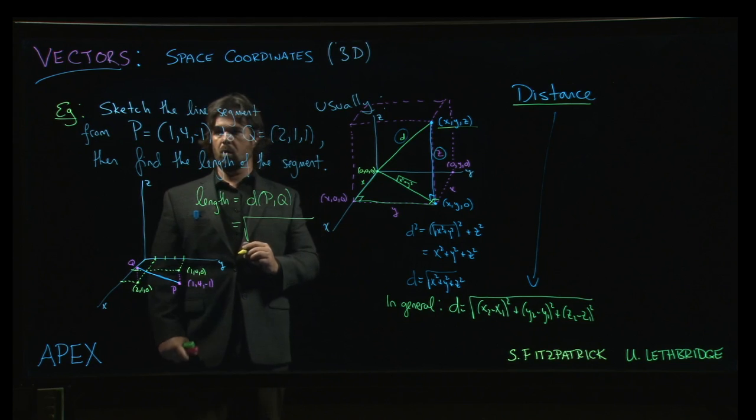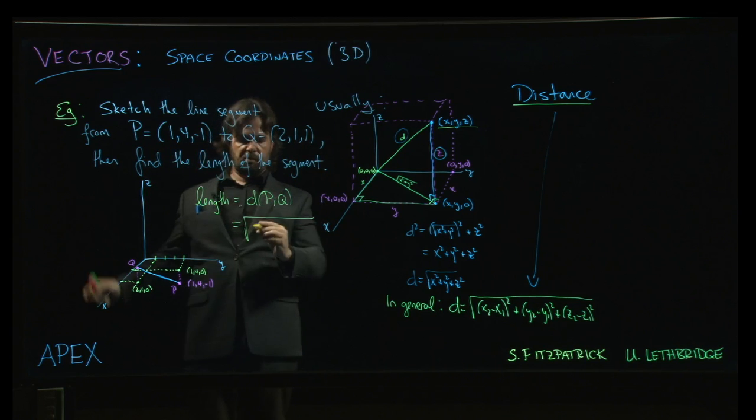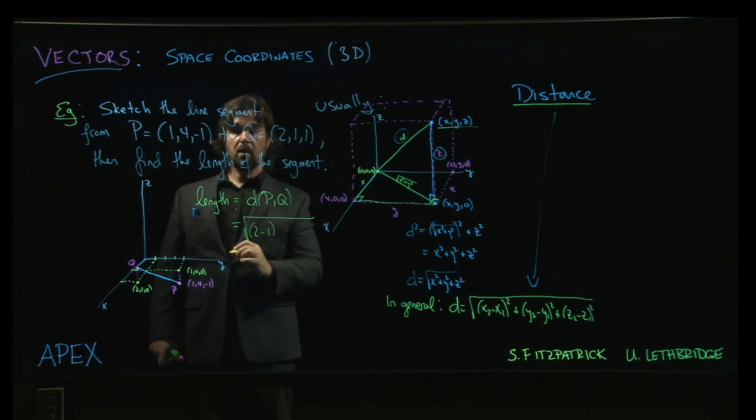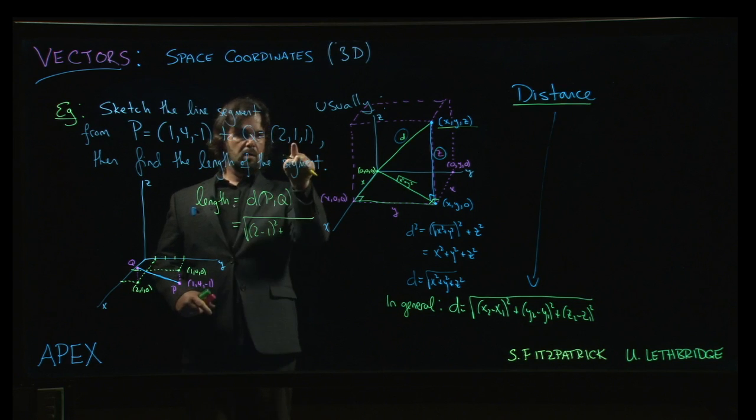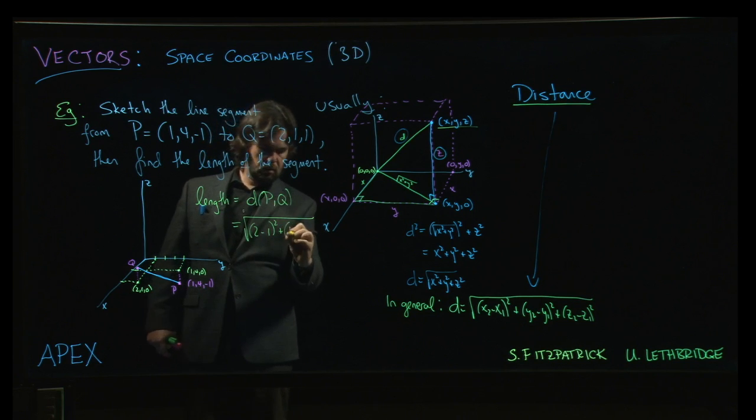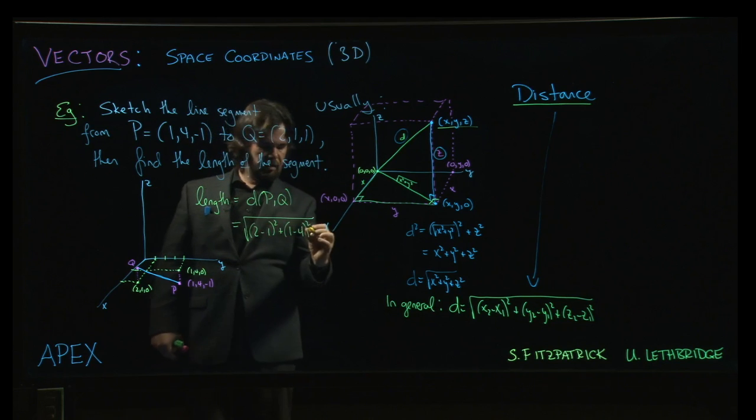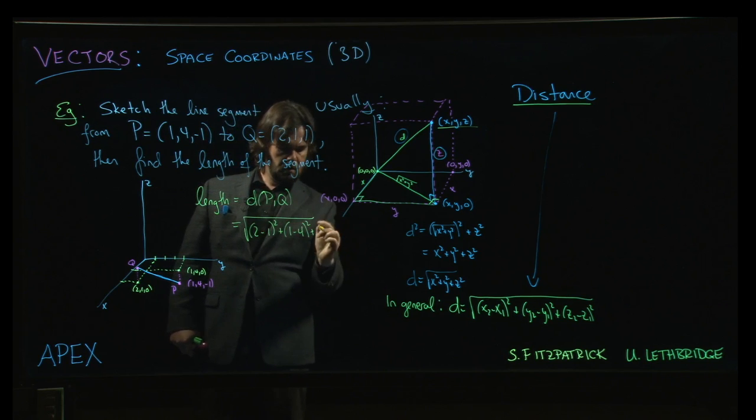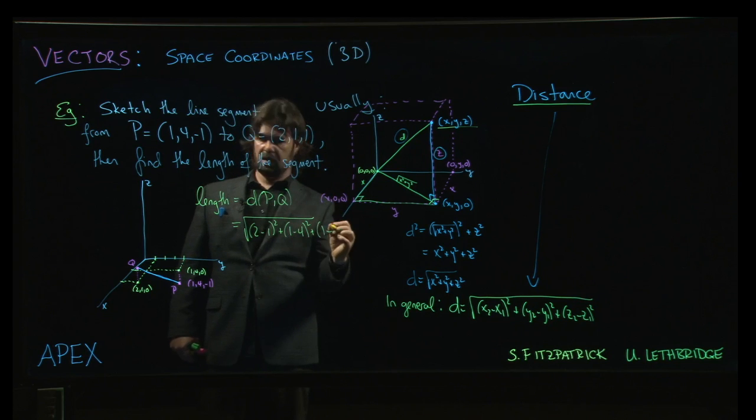we take the difference between the two x coordinates. Here we are. So we'll do final minus initials, so Q minus P. So we do 2 subtract 1 and we square that, right? Now we do the y coordinates, 1 minus 4 and we're going to square that. And finally, the z coordinates. And let's just get that x out of the way. And so for the z coordinates, we have 1 subtract minus 1, square that.